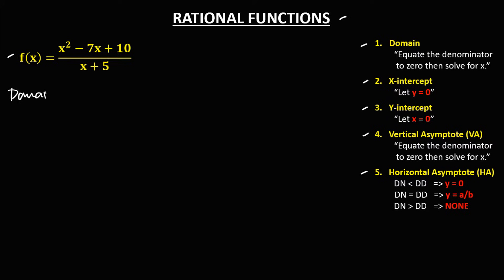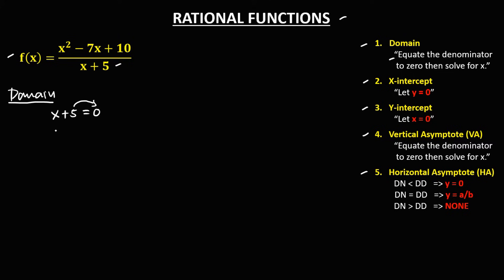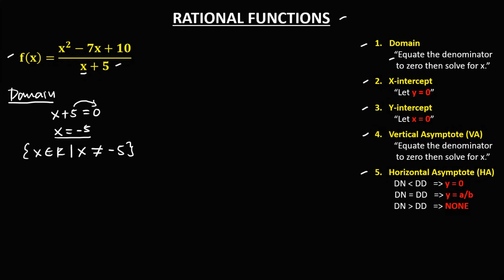To find the domain, first equate the denominator to 0, then solve for x. From this denominator, x plus 5 equals 0. To solve for x, transpose this positive 5, so x equals negative 5. If x equals negative 5, this denominator becomes 0, and if the denominator is equal to 0, the whole function becomes undefined. Therefore, the domain of this function is x element of real numbers such that x not equal to negative 5.